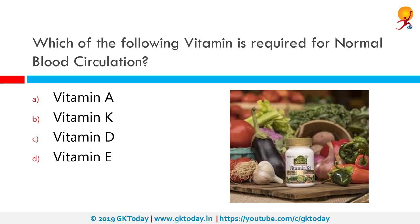Which of the following vitamins is required for normal blood circulation? The correct answer is Vitamin K. It is a fat-soluble vitamin mostly known for its function in blood coagulation. It was discovered in 1939 by Henrik Dam, who named the molecule Vitamin K according to the Danish word for blood clotting — coagulation, spelled with a K.